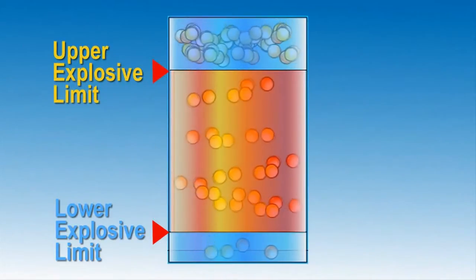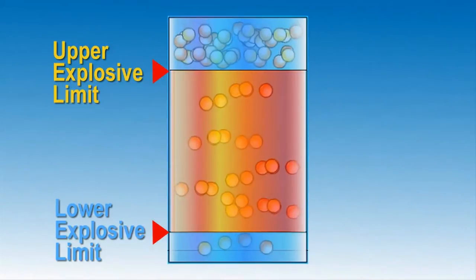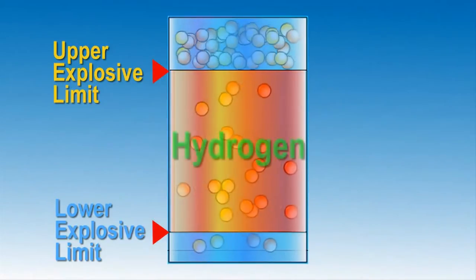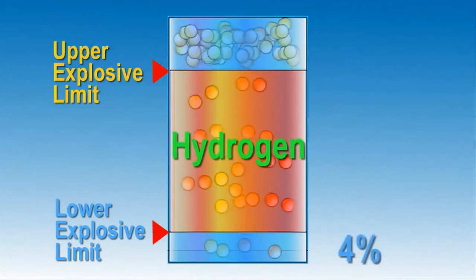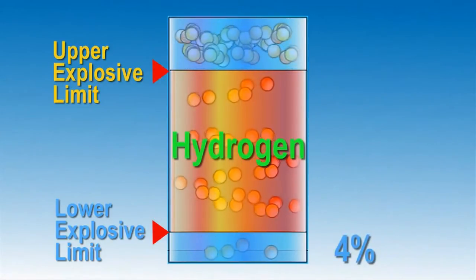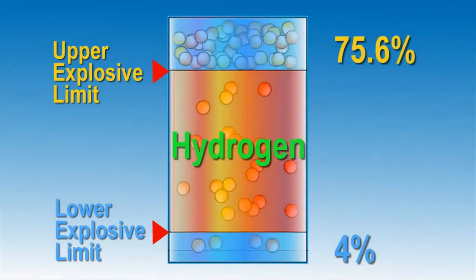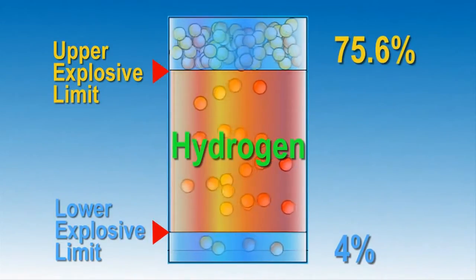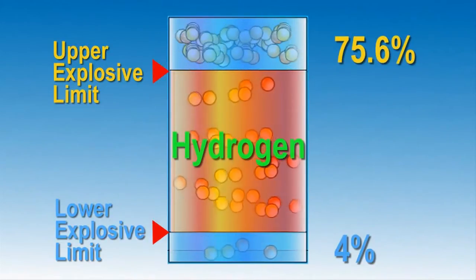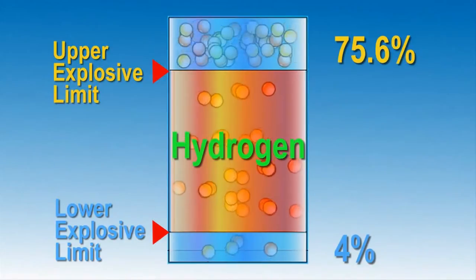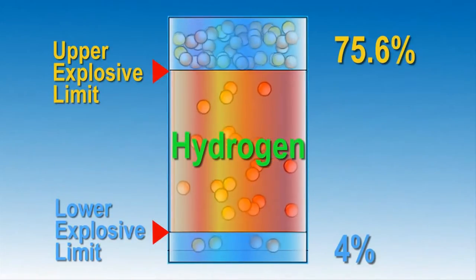It should be noted that different gases will have different threshold limits. In this example, the LEL of hydrogen is 4%, and the UEL is 75.6%. Therefore, any mixture of hydrogen and air that falls between these limits will have a flammable mixture.